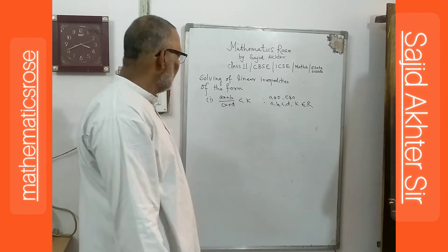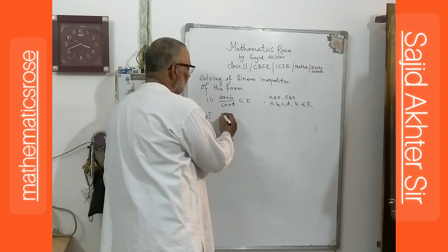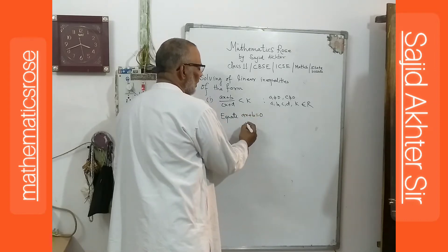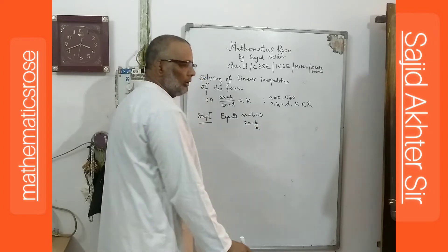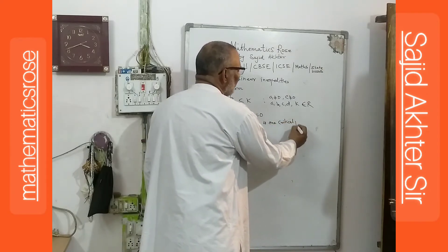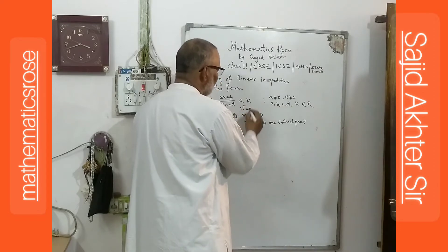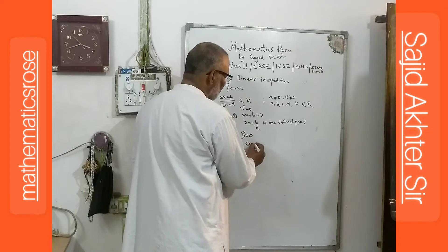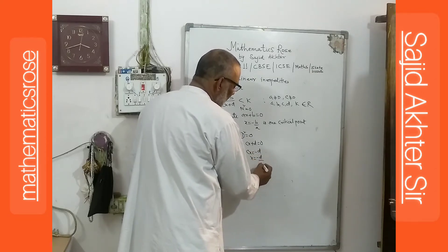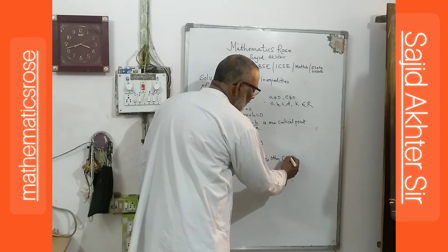Because we have the less than sign, first of all, step one: equate the numerator ax plus b equal to 0, so x is equal to minus b divided by a. This is one critical point. Next, equate the denominator cx plus b equal to 0, so x is equal to minus b divided by c. This is the other critical point.